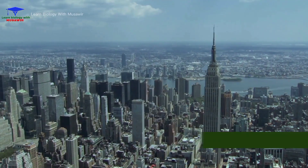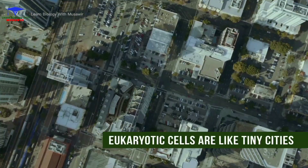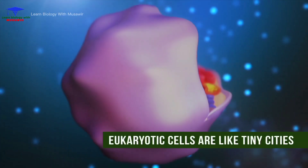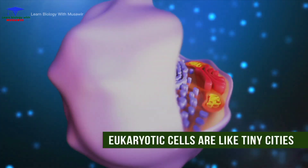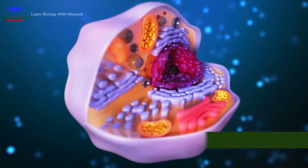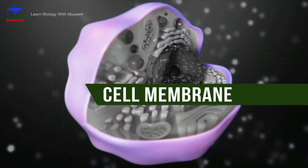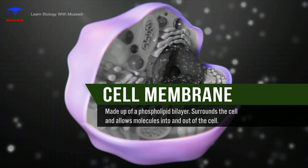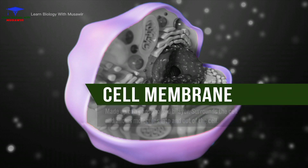Eukaryotic cells can be thought of as tiny cities because each organelle has its own important function. The cell membrane is a plasma membrane made up of a phospholipid bilayer. The bilayer surrounds the cell and acts like a gate that allows molecules into and out of the cell, so the cell membrane is like a large gate surrounding the city.